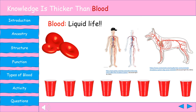As humans and many other animals, we have red blood, but some organisms have developed different colored blood, including purple, blue, green, and even white blood. I'll pass it over to my partner Gabriel to teach you about some blood ancestry.